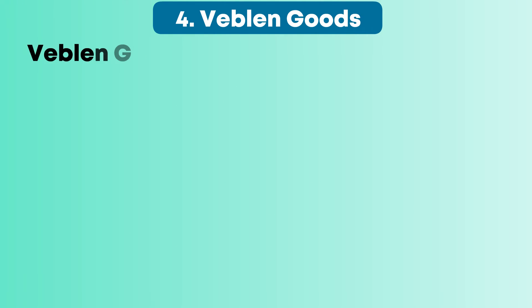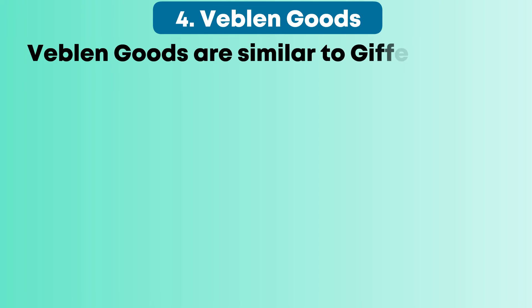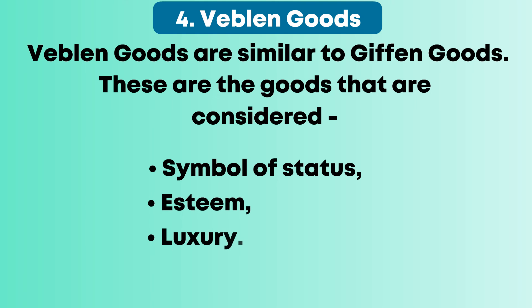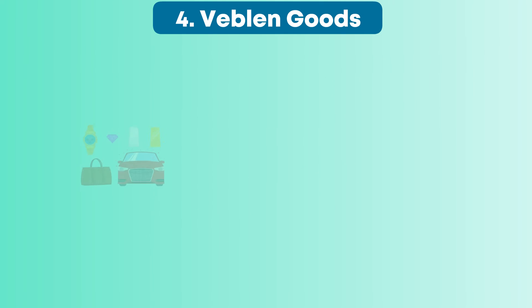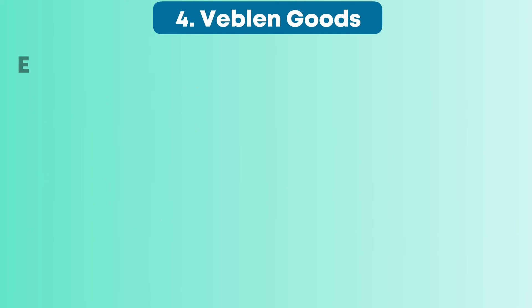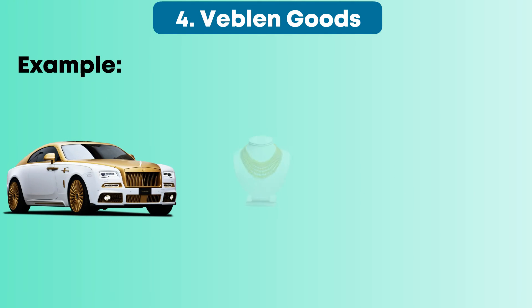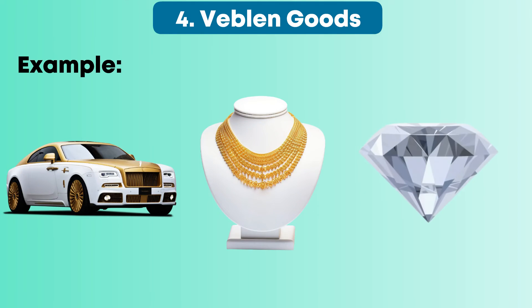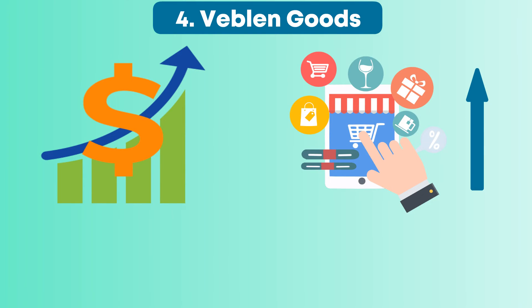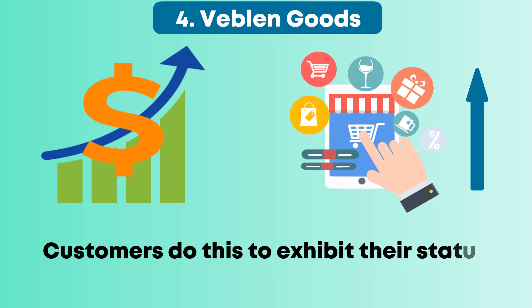Four, Veblen goods. Veblen goods are similar to Giffen goods. These are goods that are considered a symbol of status, esteem, or luxury — goods for which consumers do not mind paying a higher price. Typical examples include Rolls-Royce, jewelry, and gems. The higher the prices, the higher the intensity to purchase these goods. Customers do this to exhibit their status.